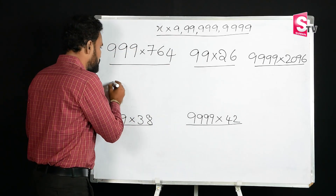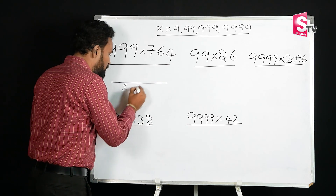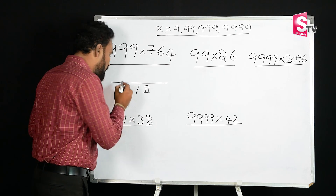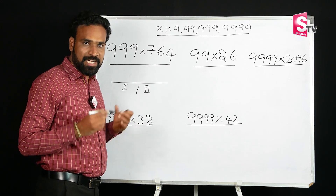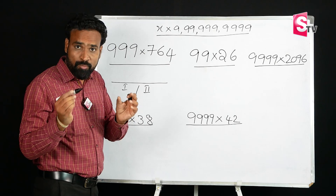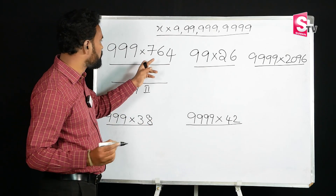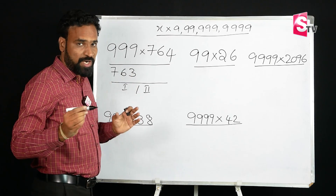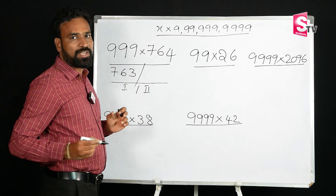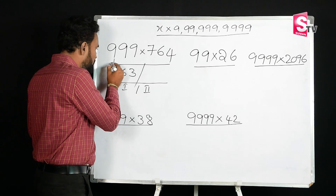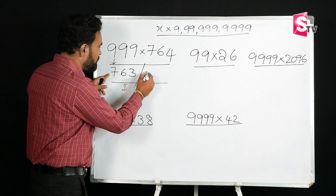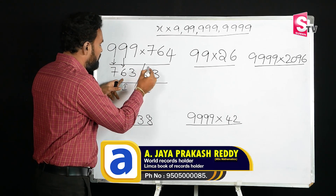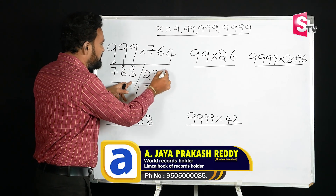Let's try another example: 999 into 764. The answer has two parts. First part: 1 less than 764 is 763. Second part, simple subtraction: 9 minus 7 is 2, 9 minus 6 is 3, 9 minus 3 is 6. So the answer is 763 | 236.